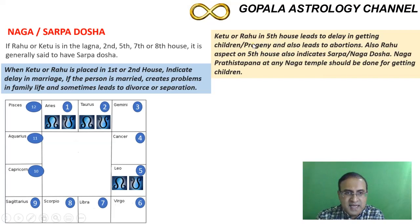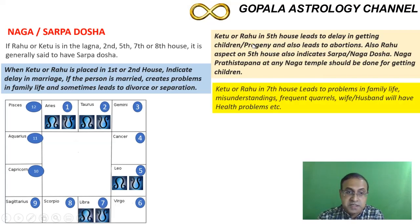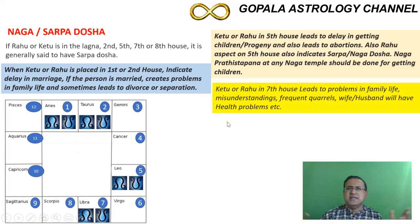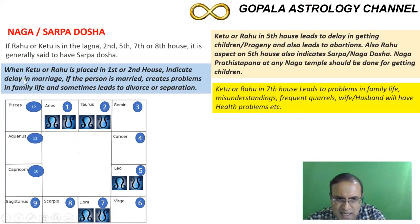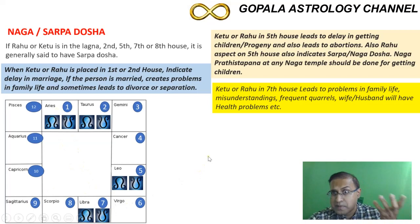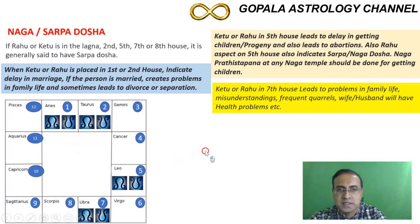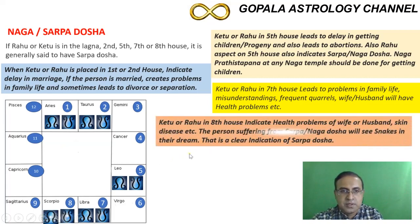With Rahu or Ketu in the fifth house, the next combination involves the seventh house — the house of marriage and family life. There can be a lot of misunderstandings and frequent quarrels between husband and wife; it becomes a day-to-day routine. The husband and wife don't understand each other, caused by the Rahu-Ketu axis of the first and seventh houses. The seventh house also covers business partners, and there will be misunderstandings there as well.